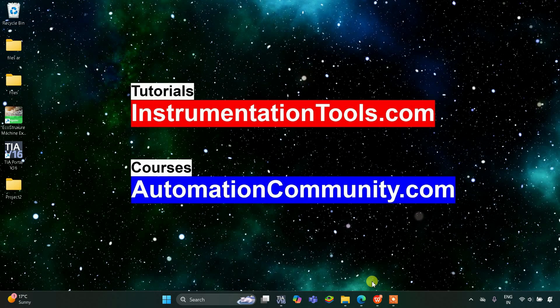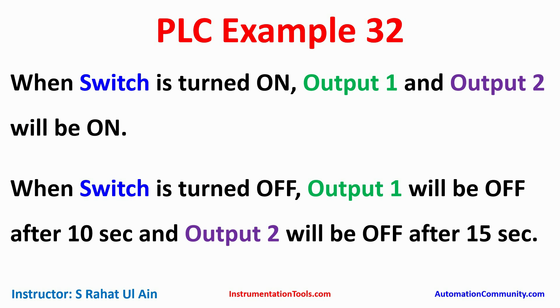Hello everyone, welcome to Automation Community. Today in this video we are going to discuss an example using an off-delay timer. In example 32, when the switch turns on, output 1 and output 2 will be on. When the switch turns off, output 1 will be off after 10 seconds and output 2 will be off after 15 seconds, instead of turning off immediately.